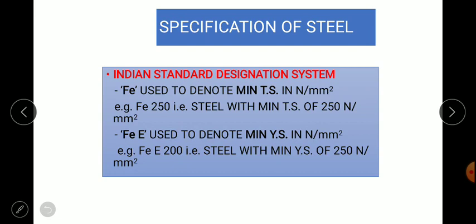The first type of designation system is Indian standard designation system. You might have seen Fe 250, one type of steel. What does this Fe 250 indicate? The first letter Fe indicates it's a steel, and 250 indicates the tensile strength of 250 Newton per mm square.